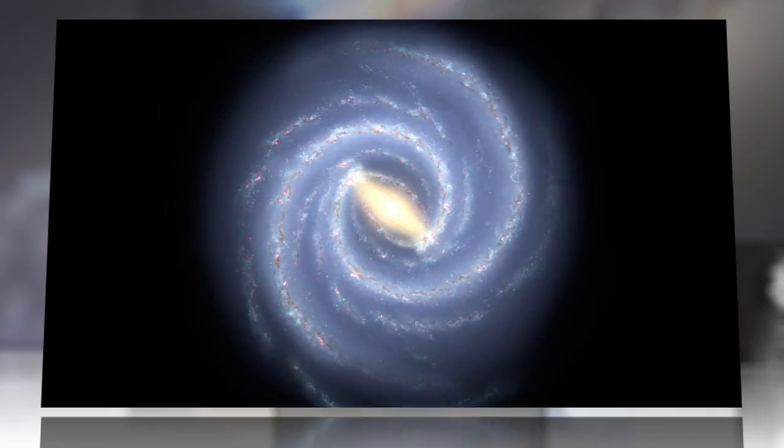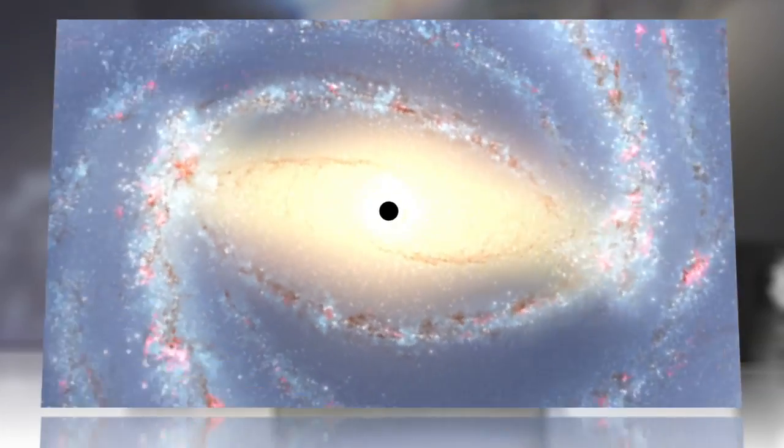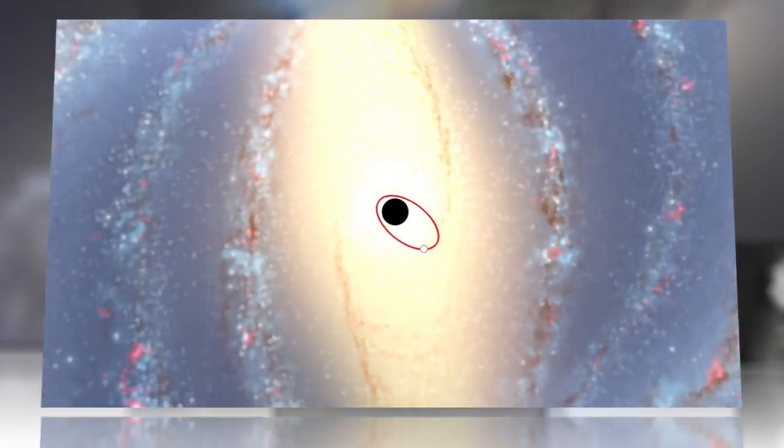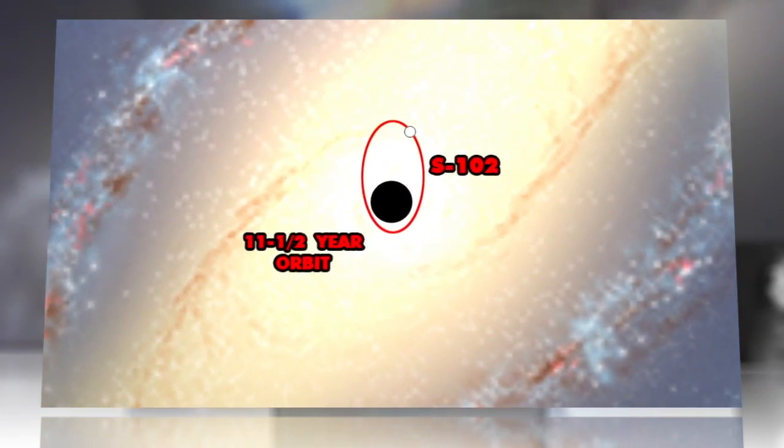Talk about warp speed. Astronomers have found a star so close to the massive black hole at the center of our Milky Way galaxy that its orbit around the gravitational Goliath is only 11 and a half years.